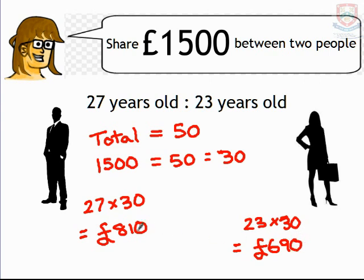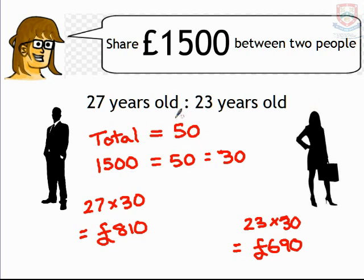If we added those two amounts together, we would come back to our £1,500. We've kept this ratio just by working out what the multiplier is — how much money each person would get for each year they were alive. This could span across three people. If we had another person who was 30 years old, that would have increased our total and therefore decreased the amount each person gets, but the method stays the same.